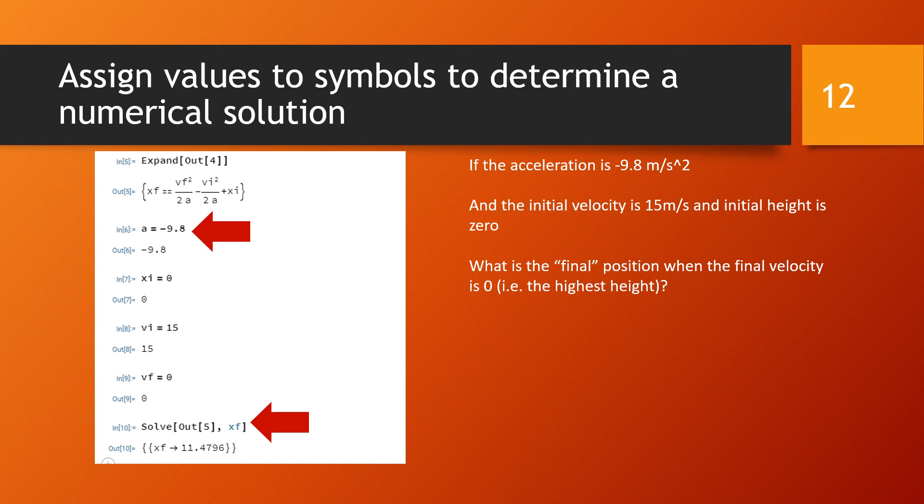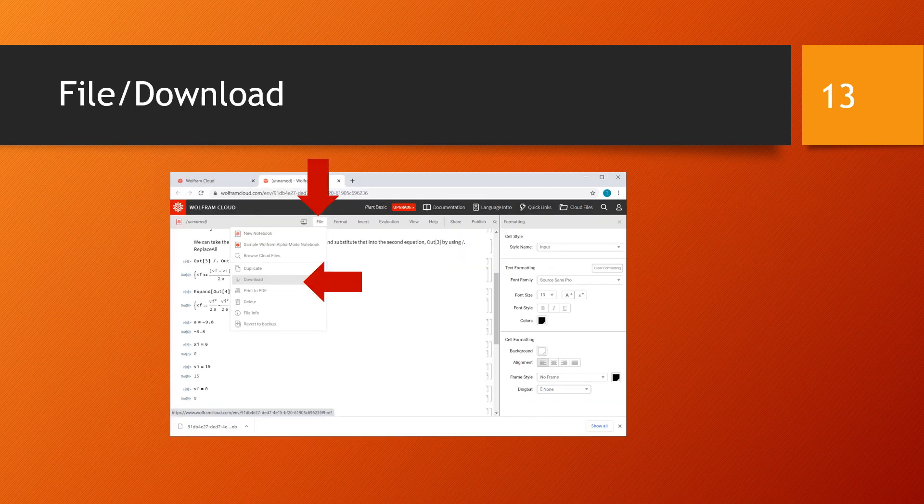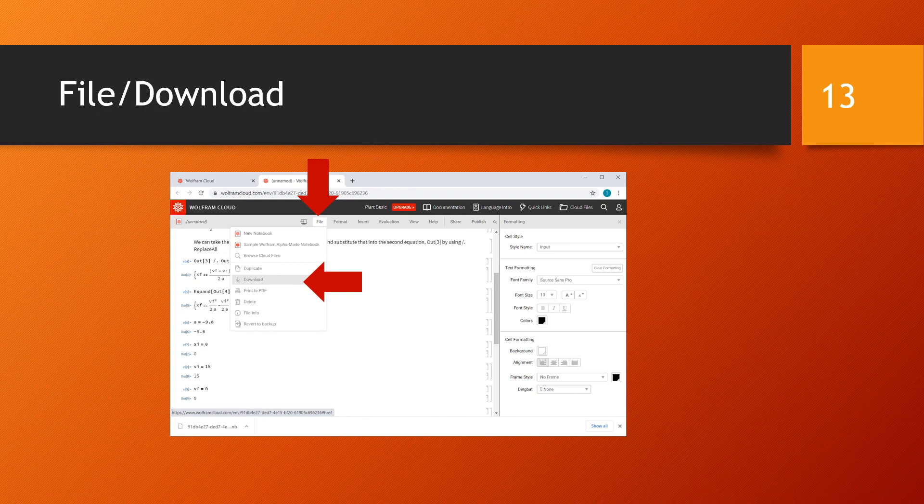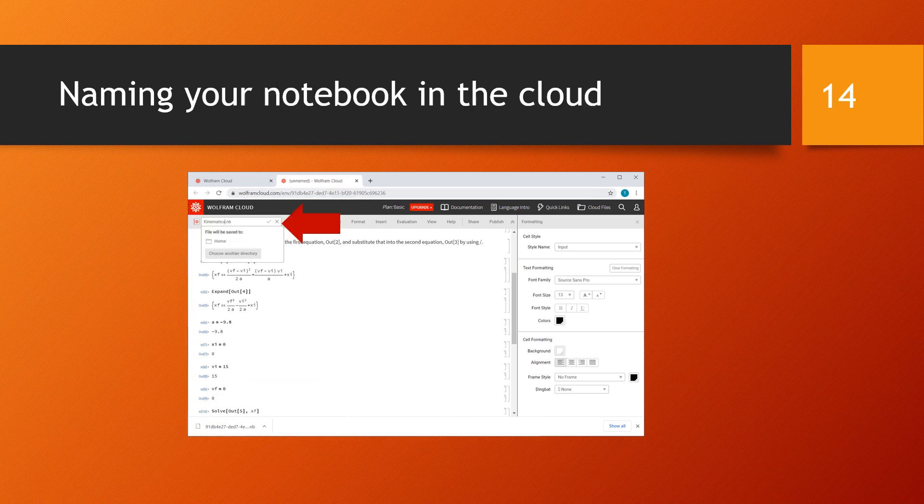If you want to save your work from Wolfram Cloud and maybe use it later in Mathematica, then you can download it. So go to the menu, go to the file item on the menu and choose download. This will assign the notebook some name, it'll have an extension .nb for notebook and put it in your downloads folder.